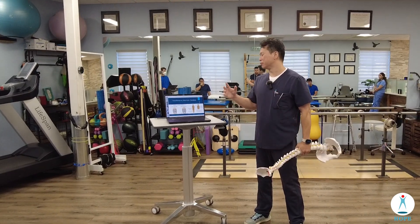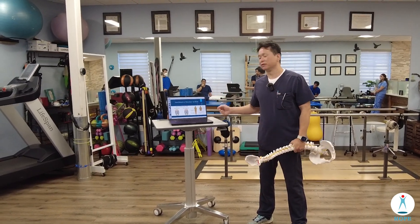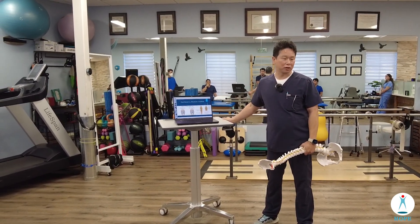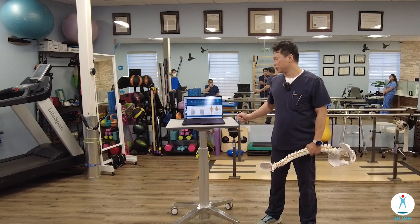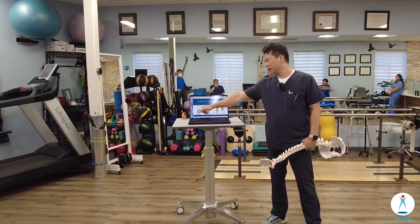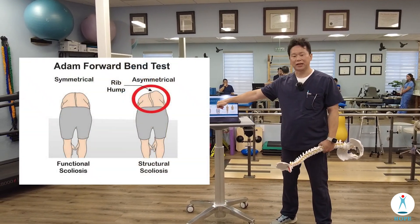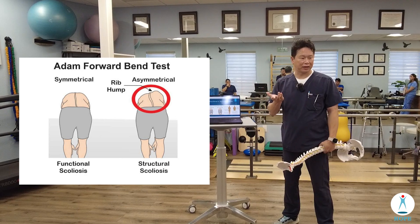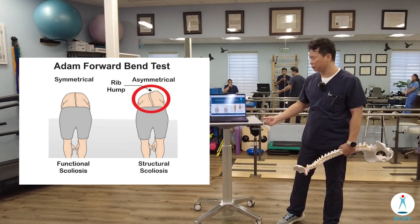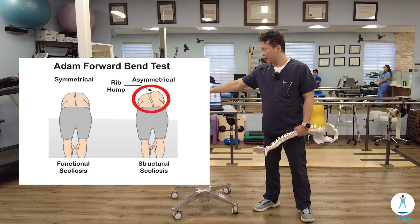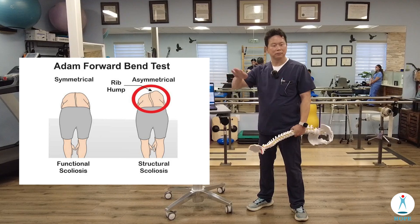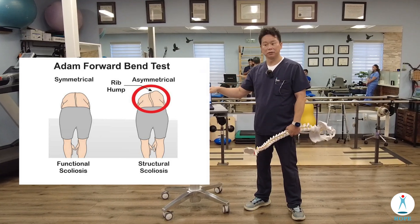Scoliosis can usually be separated into functional scoliosis and structural scoliosis. The Adams forward bend test is how we find out which type it is. If they bend forward and the back is flat, then it's more functional.